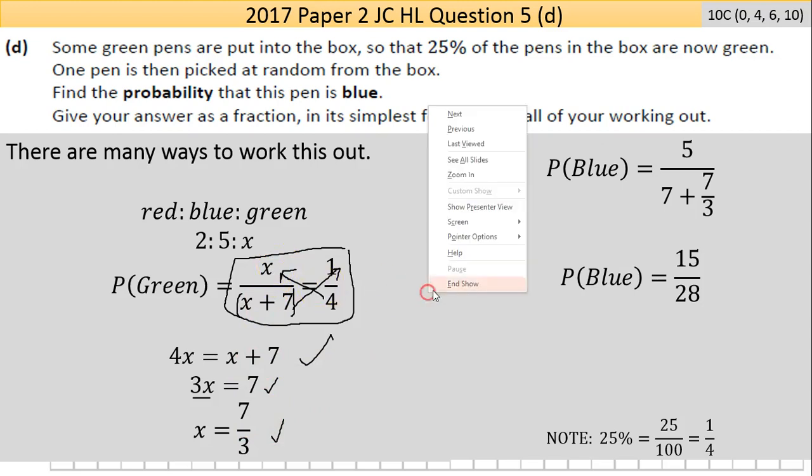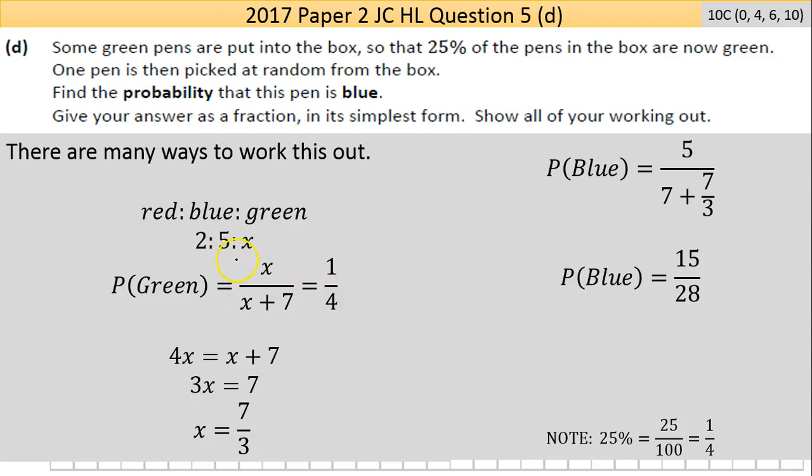If we go back to what the probability of blue was, let me just get rid of stuff here to clarify. This is the bit we now need.